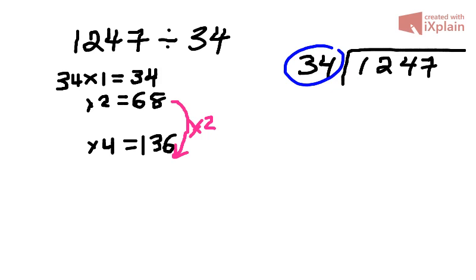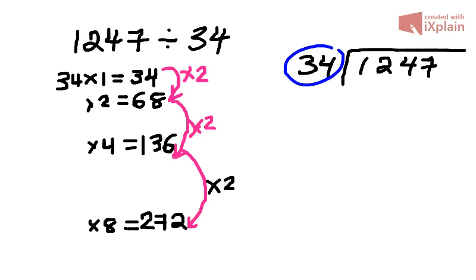Then we jump again and we say let's do times table of 8. Why would I choose 8? Because again, doubling tables of 34 times 4, I'll get times table of 34 times 8. So all we have to do is double 136, and that will be 272. So if we look, all we've done here was we've doubled, so from 1, 2, 4, and 8.